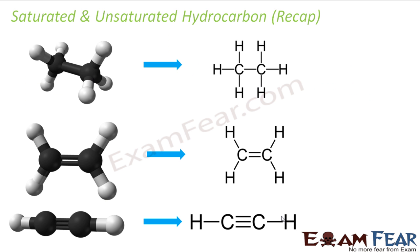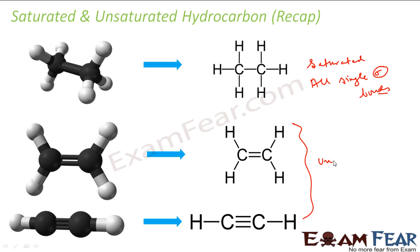Saturated means all single bonds — for example, alkanes are fully saturated with no double bonds. Unsaturated compounds have double or triple bonds. If you see ethane, it has all single bonds and is saturated. Ethene has a double bond and is unsaturated. Ethyne has a triple bond and is also unsaturated.